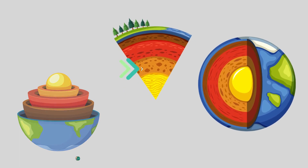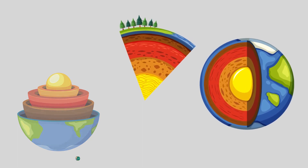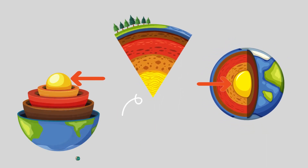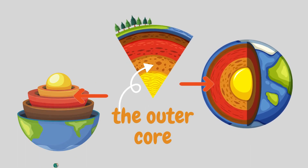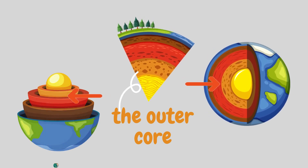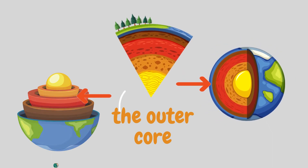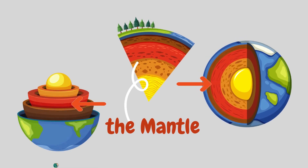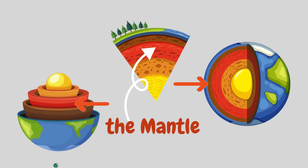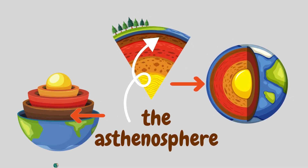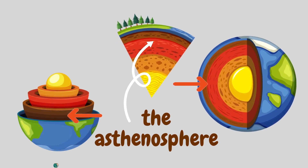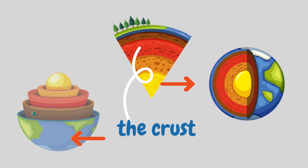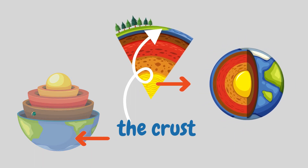Earth has five layers. The first one from the inside is called the inner core. The second layer is called the outer core. The third layer is called the mantle. The fourth layer is called the asthenosphere. And the surface of the Earth, the last layer, is called the crust.